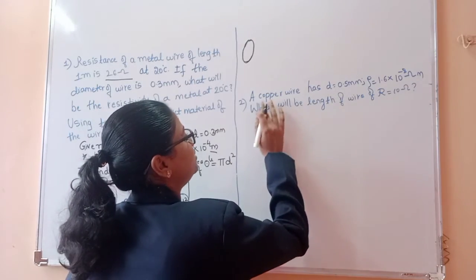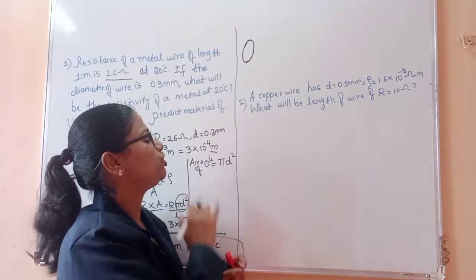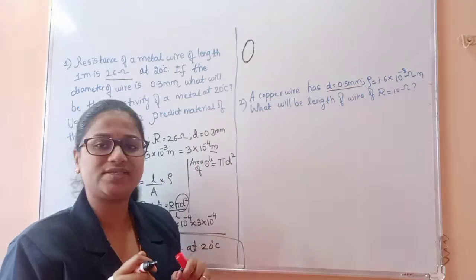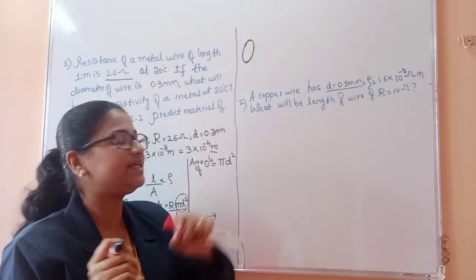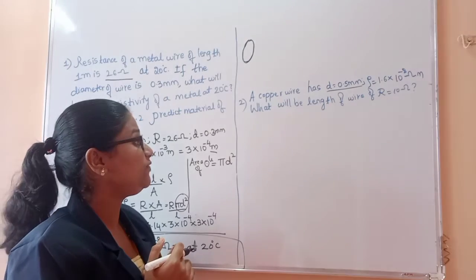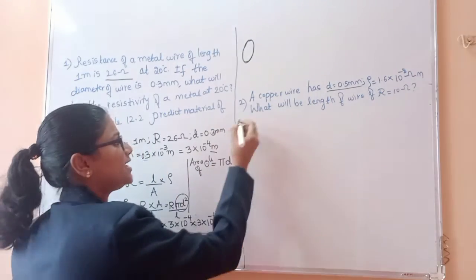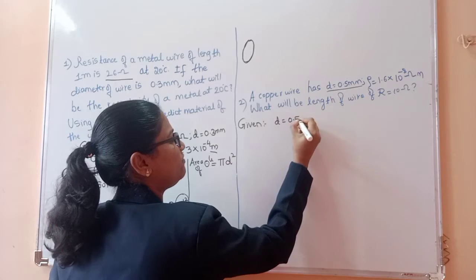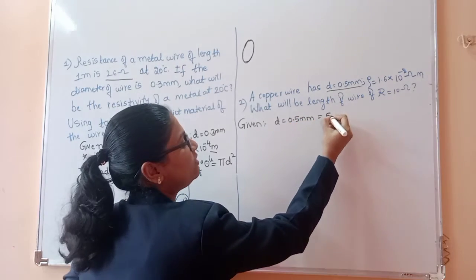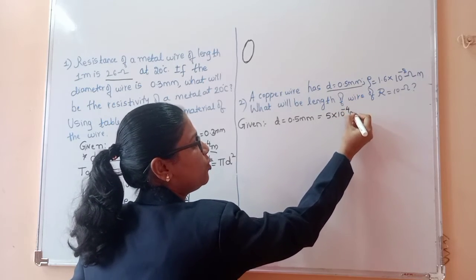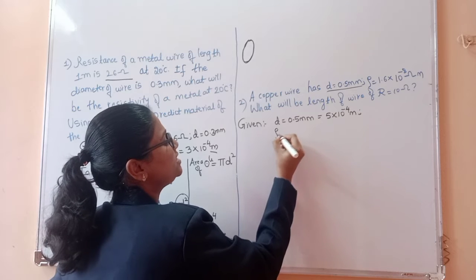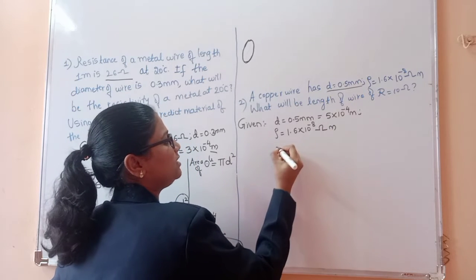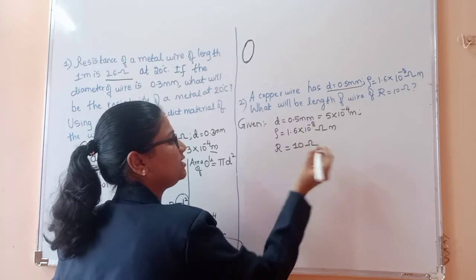The next problem is an exercise question. A copper wire has diameter 0.55 millimeter and resistivity ρ = 1.6 × 10⁻⁸ ohm meter. What will be the length of the wire? Given: D = 0.5 millimeter = 5 × 10⁻⁴ meter, ρ = 1.6 × 10⁻⁸ ohm meter, resistance R = 10 ohm. We have to find L.